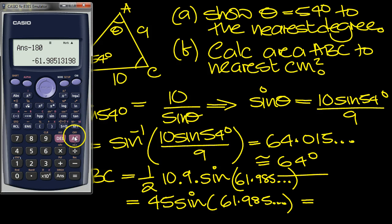So OK, we can get rid of that now. And it's 45 times sine of 61.985. That should be more than accurate enough.